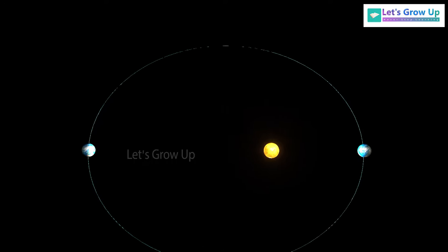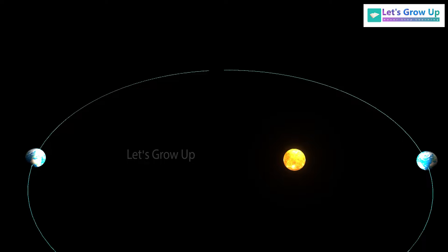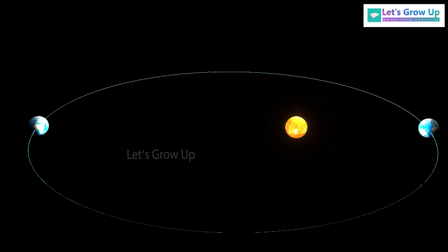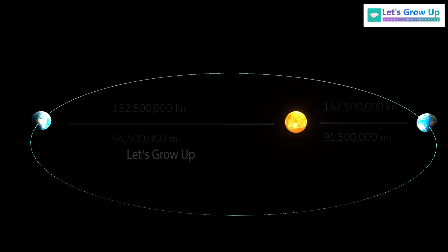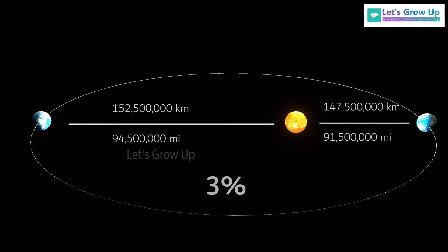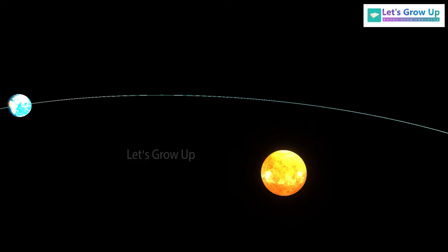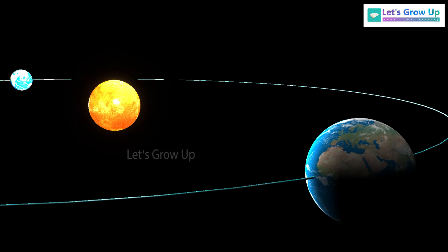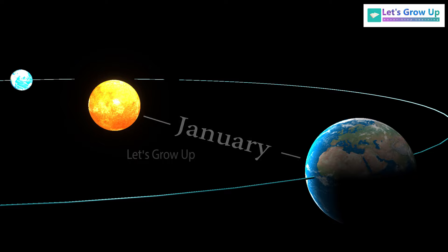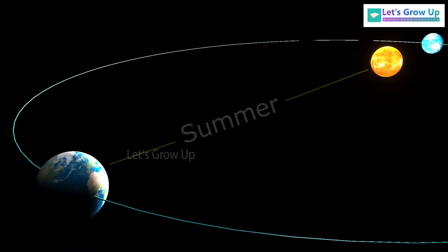However, the distance between these two points from the sun is not much — only a 3% difference. Just think: when the Earth is near the sun, then it is winter on the Earth instead of summer. And when the Earth is farthest from the sun, then it is summer instead of winter.